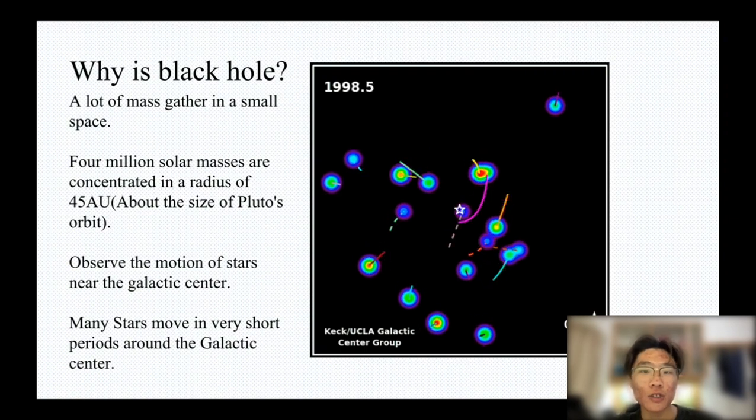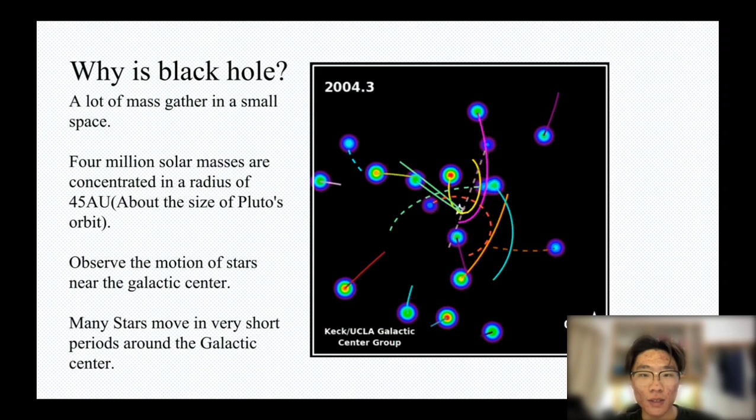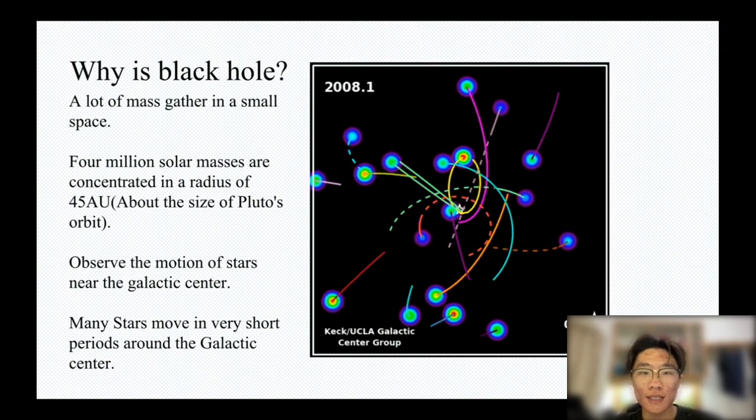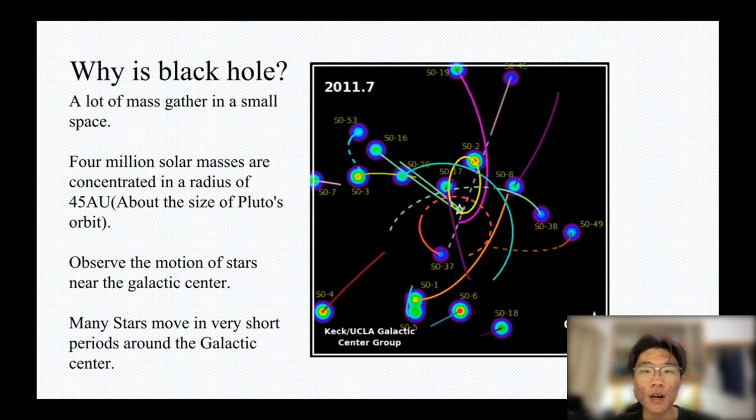So the gravitational pull around the galactic center is very strong, which is also consistent with the characteristics of a black hole.